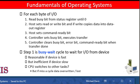The complete protocol for interaction between a host and a controller can be intricate, but the basic hand-shaking notion is simple. Assume that two bits are used to coordinate the producer-consumer relationship between the controller and the host. The controller indicates its state through the busy bit in the status register. Remember that to set a bit means to write a 1 into the bit, and to clear a bit means to set it to 0. The controller sets the busy bit when it is busy working and clears the busy bit when it is ready to accept the next command.